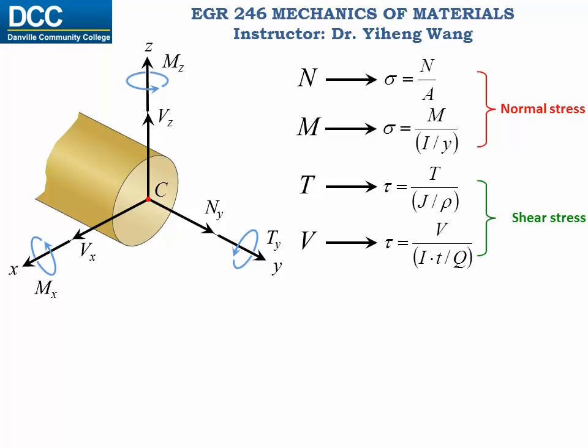These equations are written in a similar form to indicate their similarities. The stress is caused by the numerator, which is the driving force, over the denominator, which is a combination of geometric properties. In this video we will learn how to determine the state of stress of an arbitrary particle at a cross section as caused by the combination of these internal reactions. You can also consider this video as a summary of what we have learned so far.